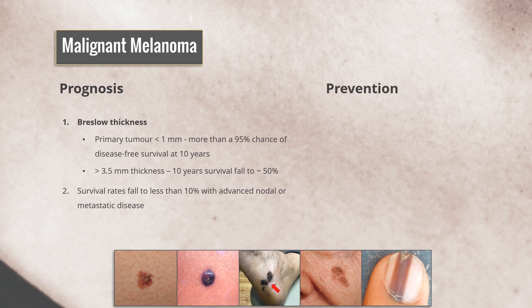As therapy for advanced and metastatic disease remains unsatisfactory, primary prevention and early detection are essential. The disease can be prevented by reducing exposure to the sun, using high-factor sunscreen, and wearing protective clothing.